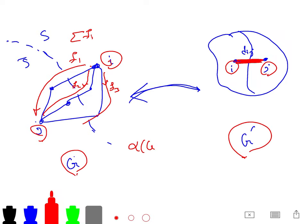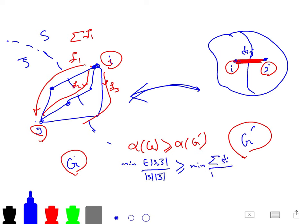The point I want to make is that alpha of G is greater than alpha of G prime. Why? Because just write the definition of that. Alpha of G is minimum of all edges going from S to S bar. And I want to show it is greater than minimum of your demand here, S, S bar.